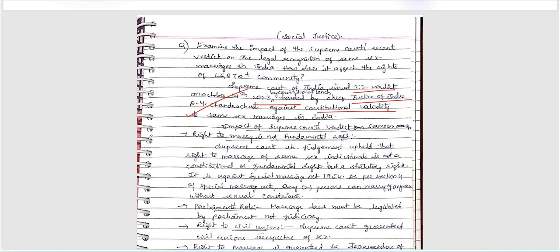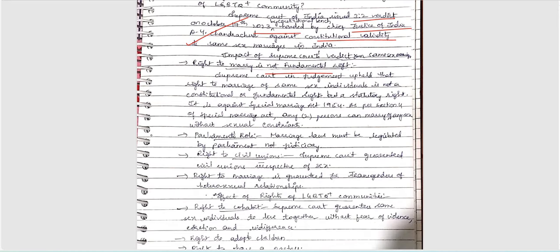Impact of the Supreme Court's verdict on same-sex marriages: the right to marry is not a fundamental right. The Supreme Court judgment upheld that the right to marriage for same-sex individuals is not a constitutionally guaranteed right, but a statutory right under the Special Marriage Act. As per the Special Marriage Act, only two persons can marry, without sexual constraints.